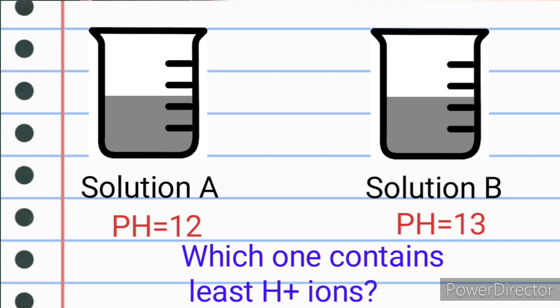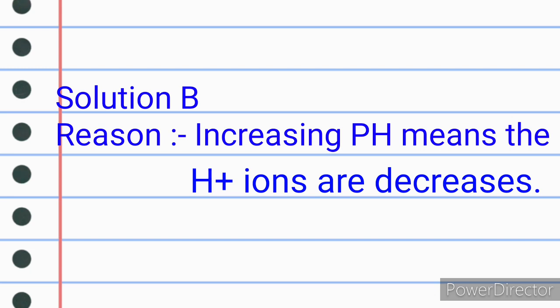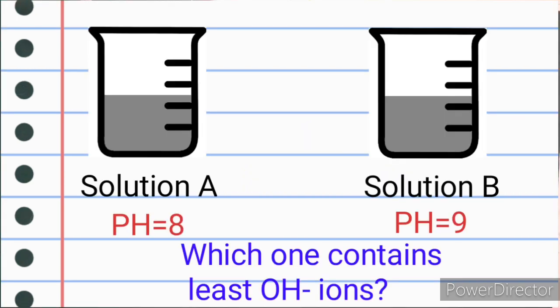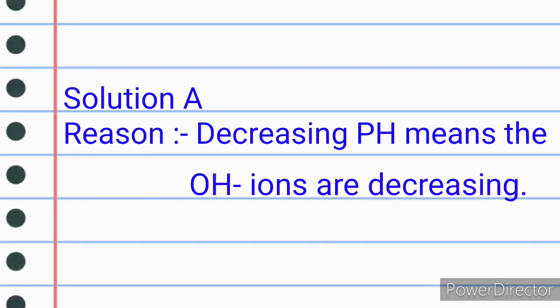Question 3: pH of solution A is 12 and pH of solution B is 13. Which solution contains the least H+ ions? Solution B, because increasing pH means H+ ions are decreasing. Question 4: pH of solution A is 8 and pH of solution B is 9. Which solution contains the least OH⁻ ions? Solution A, because decreasing pH means OH⁻ ions are decreasing.